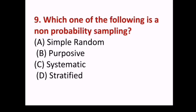Next question: Which one of the following is a non-probability sampling? (A) Simple random, (B) purposive, (C) systematic, (D) stratified. Answer B, purposive.